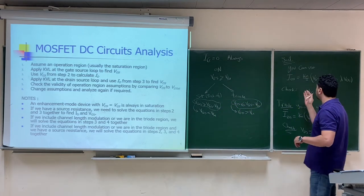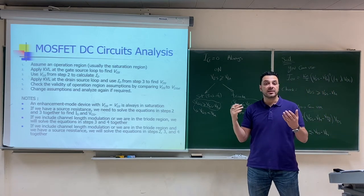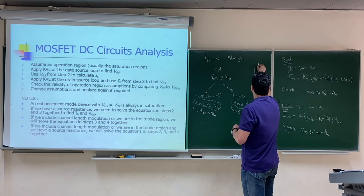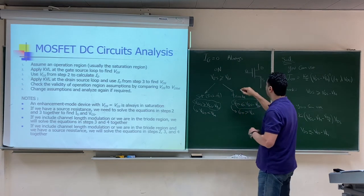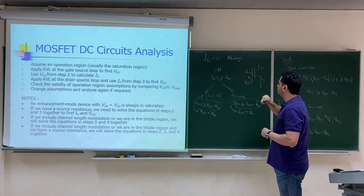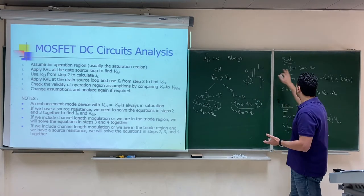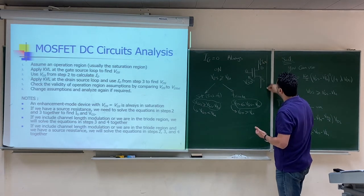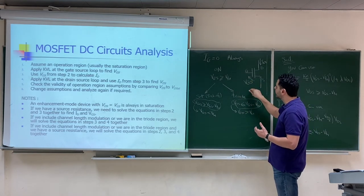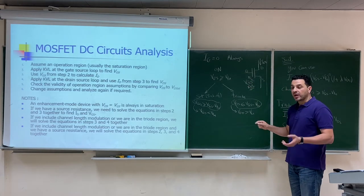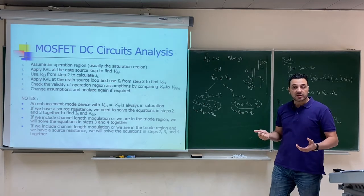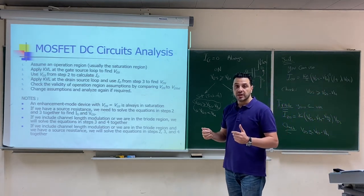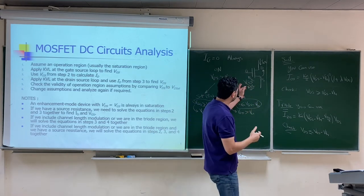For a DC MOSFET circuit, the general procedure is to start with the gate-source loop. You apply KVL in the gate-source loop to calculate VGS. From VGS you can calculate the drain-source current I_DS. Then you move to the drain-source loop. Once you have VGS and VDS, you can perform the check to determine whether the transistor is in saturation or triode.